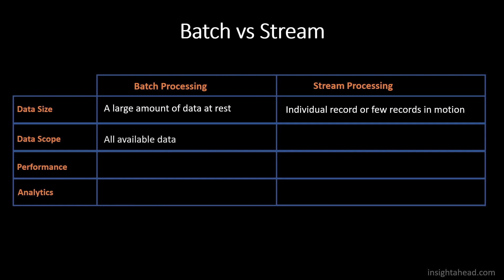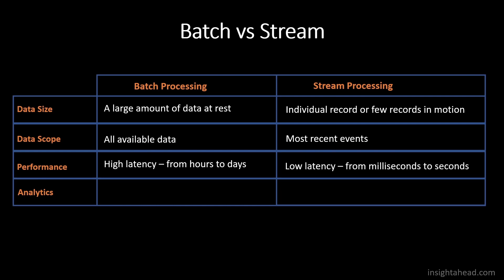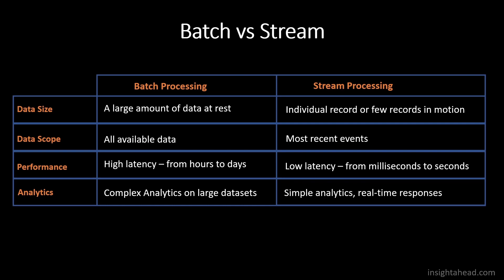If you look at the data scope, we will process all the data available in a batch processing system, but in a stream processing system we will only process the most recent event. If you look at performance, we will see that batch processing has a higher latency than stream processing. A batch processing job can take hours to run to the end, and with stream processing it really just takes a few milliseconds, because we only process the most recent events. We can also look at the type of analytics we can do with both. With batch processing, these are really quite complex jobs that we will do on large data sets, and with stream processing we just do simple analytics and real-time responses to events.